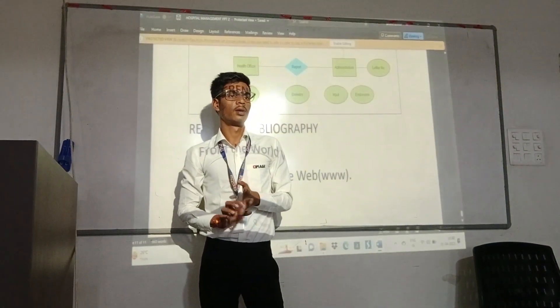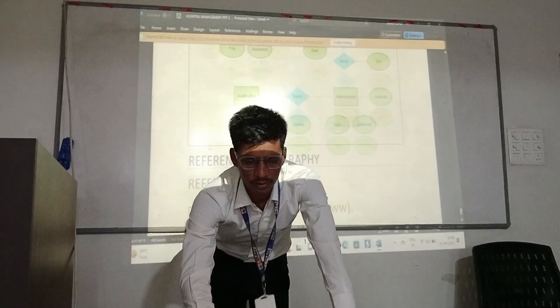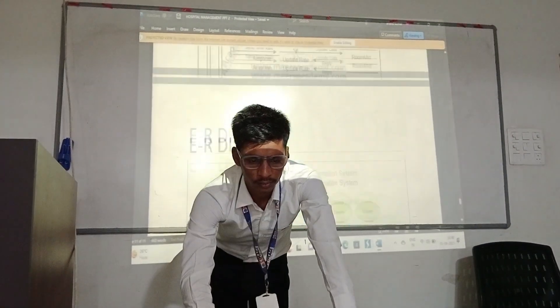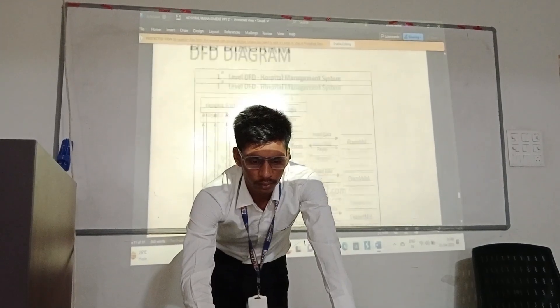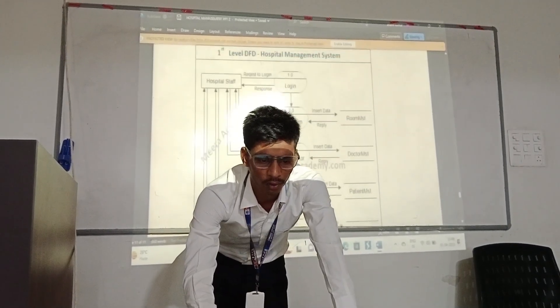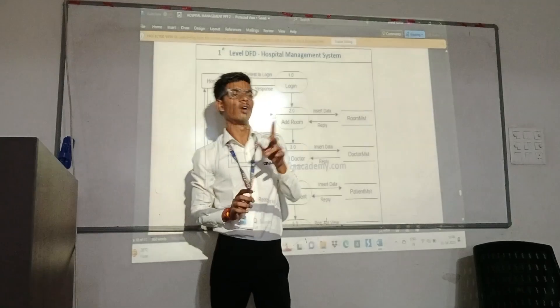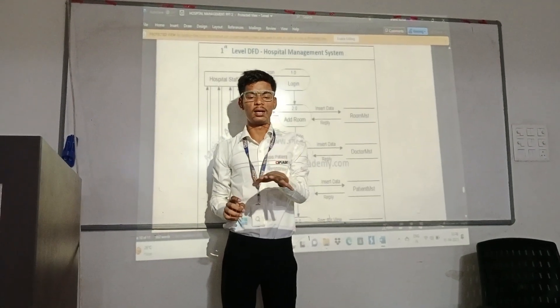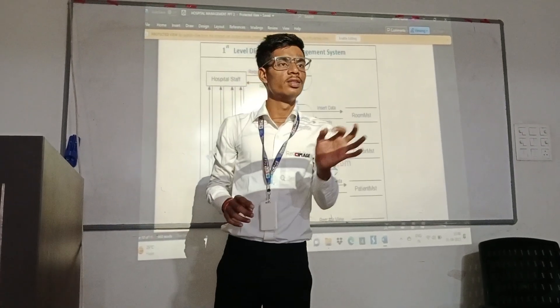Evaluator asks: Where is your DFD? The presenter confirms: DFD is also there. This one is the DFD. The evaluator asks about the levels: Start level, first level and second level. There are no levels shown. Evaluator: You have only provided a zero level DFD? Presenter: Yes, sir. Because only a zero level DFD is provided, everything is just at the start level, so there is no first level data flow diagram. What is the first level DFD?